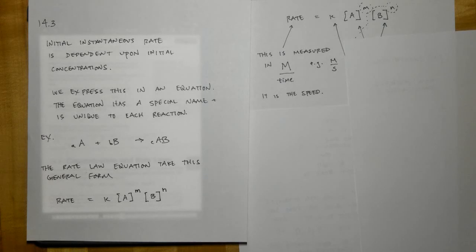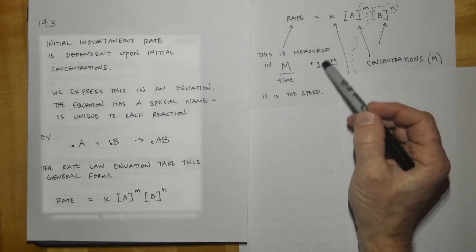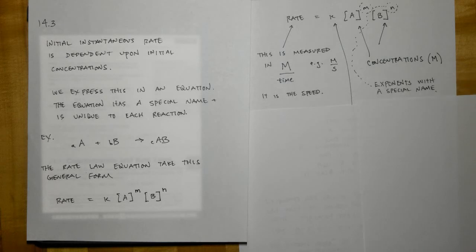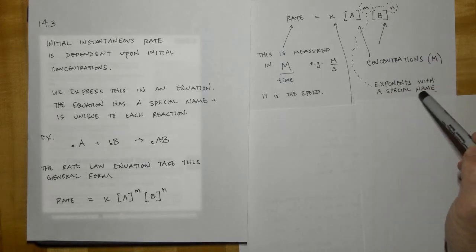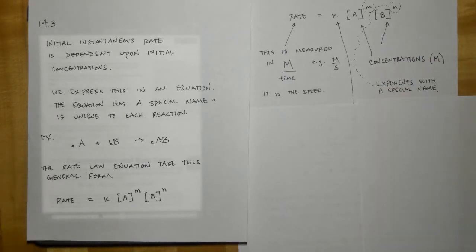The A and the B, these brackets around here, mean concentrations. They're measured in molarity, and that's its units. It's capital M, or mole per liter. So keep your units straight that these are molarity per unit time over here, and these are capital M's, or molarities. The little exponents have a special name. The M and the N have a special name, and we'll talk about those in just a second. The exponents right there.